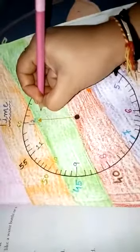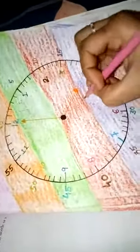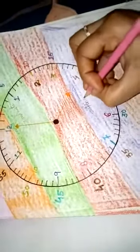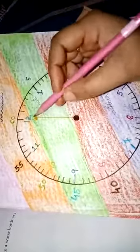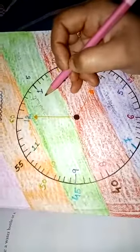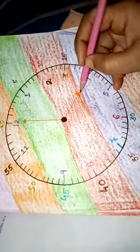This is your minute hand, and this is your hour hand. This tells us the minutes, how many minutes there are, and this tells us the hour.